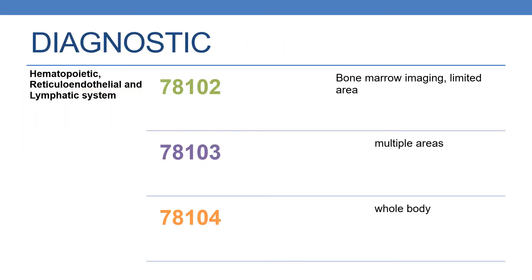Now coming to the nuclear medicine codes, diagnostic for blood and lymphatic system — hemopoietic, reticuloendothelial and lymphatic system. The first code is 78102: bone marrow imaging, limited area. The next code is 78103: bone marrow imaging, multiple areas. And 78104 deals with bone marrow imaging, whole body.